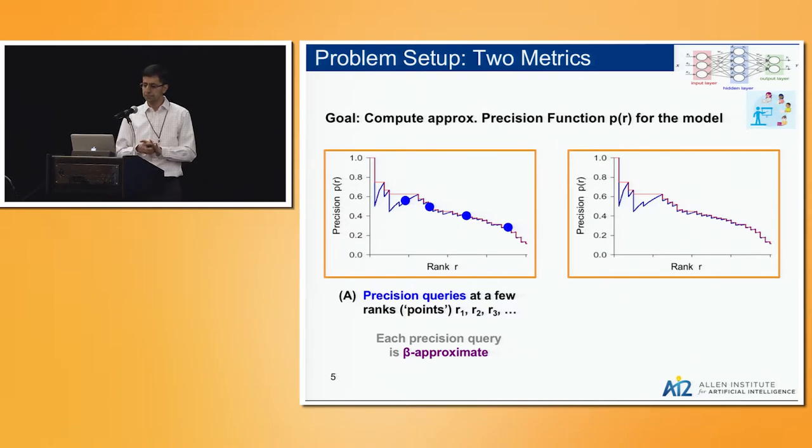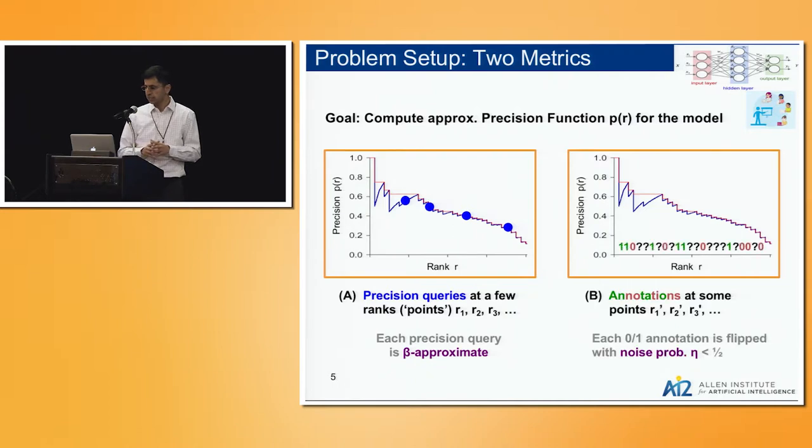In this case, we measure the success of the algorithm both by how tight the approximation is and also how many blue points you have to query. And we'll assume that for each blue point you can get some beta approximation of it. In the model on the right, we'll work directly with annotations. For each point I can query it and get either a one or zero annotation.